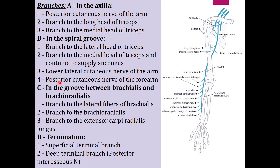In the groove between brachialis and brachioradialis, when the radial nerve comes anteriorly, it gives branches to the brachialis muscle (lateral fibers), brachioradialis muscle, and extensor carpi radialis longus muscle. Note: brachialis is supplied by two nerves — its medial part by the musculocutaneous nerve, and its lateral part by the radial nerve. The radial nerve terminates as two branches: the superficial terminal branch and the deep terminal branch (posterior interosseous nerve), which supplies all muscles of the posterior compartment of the forearm.